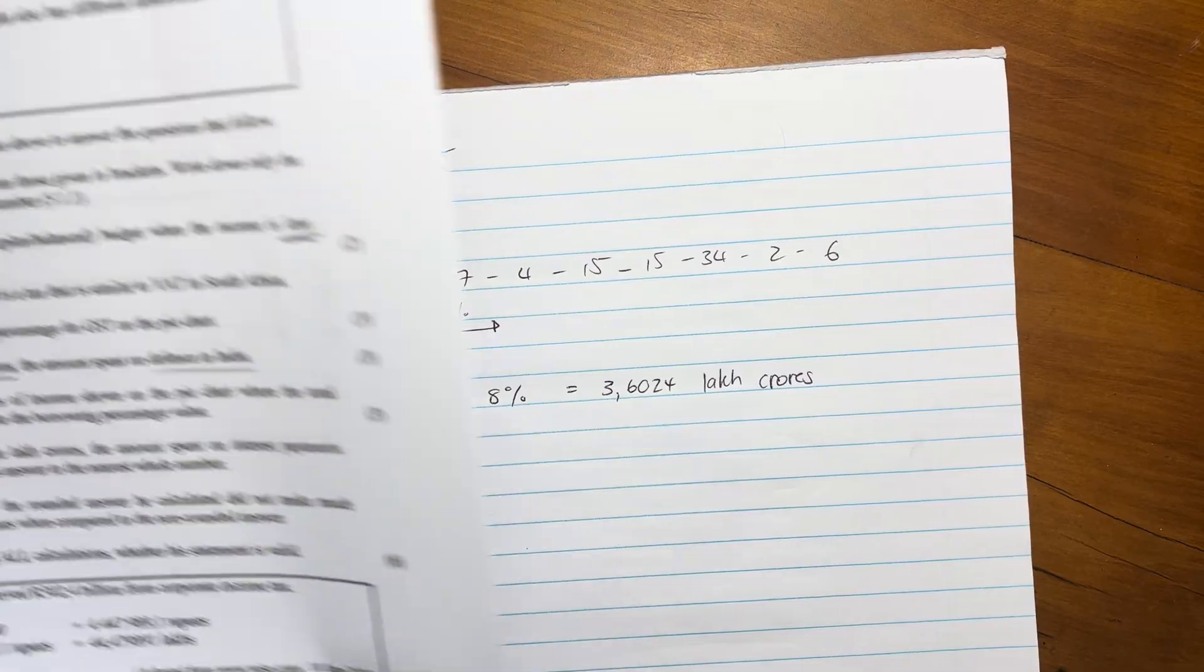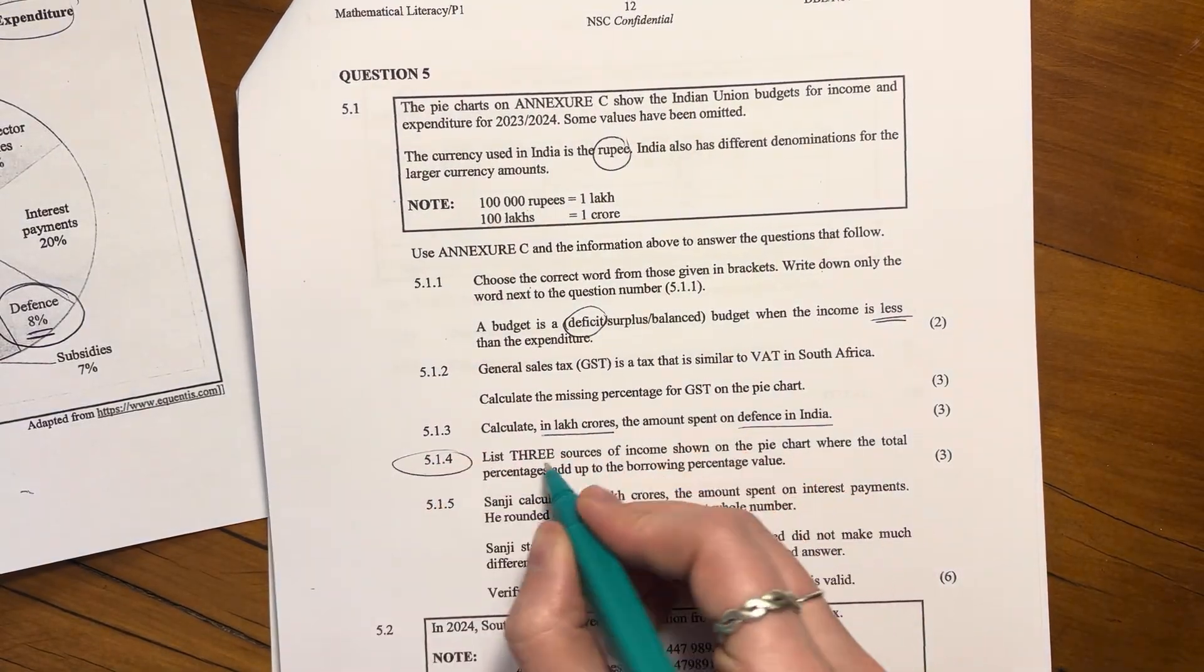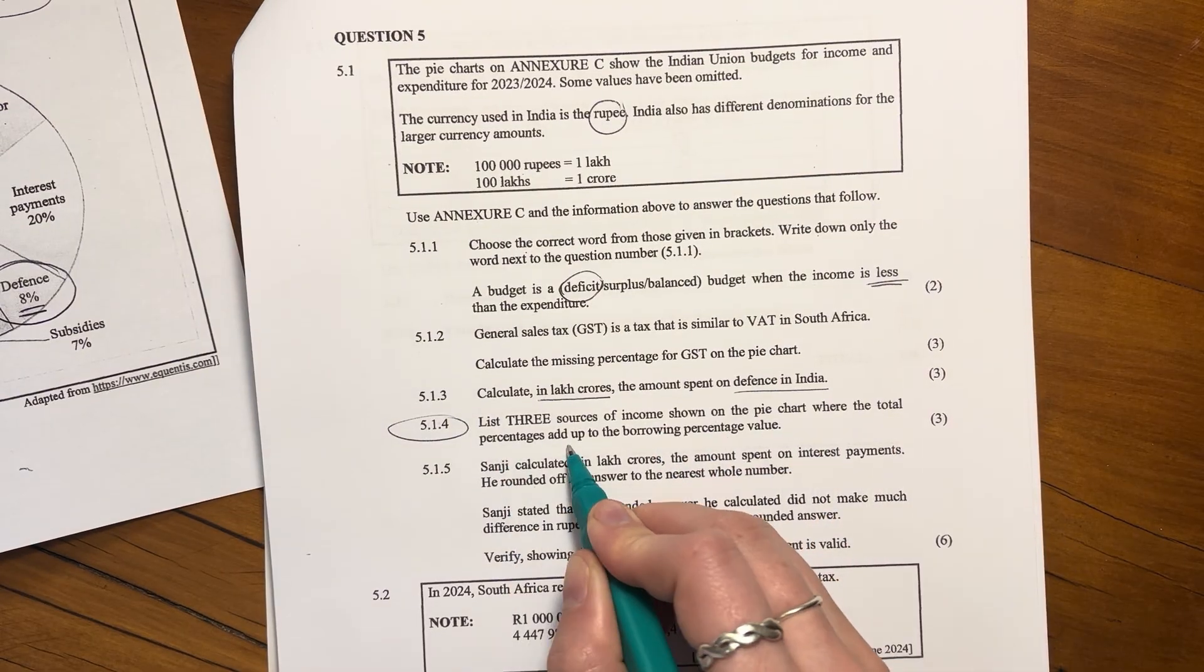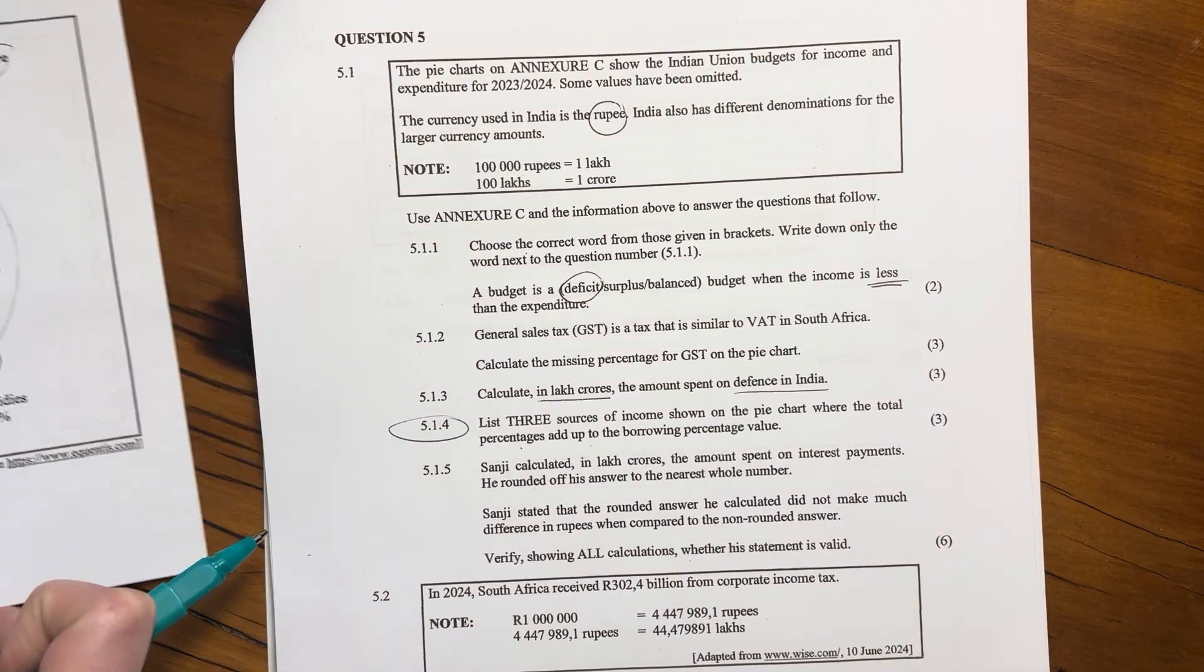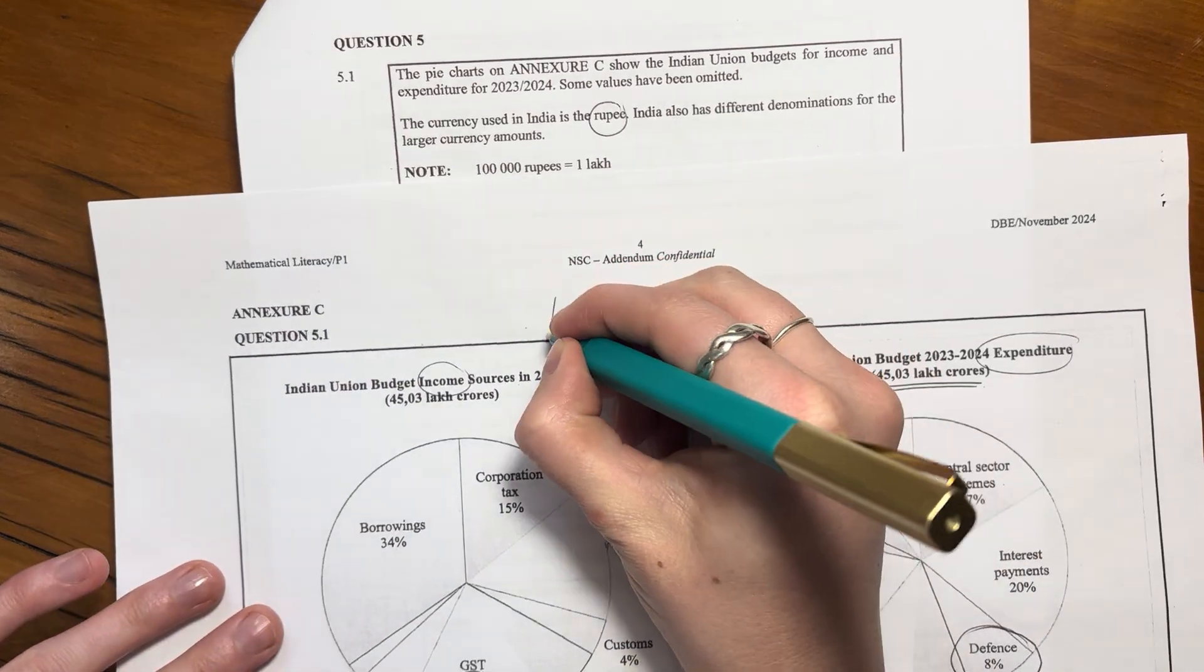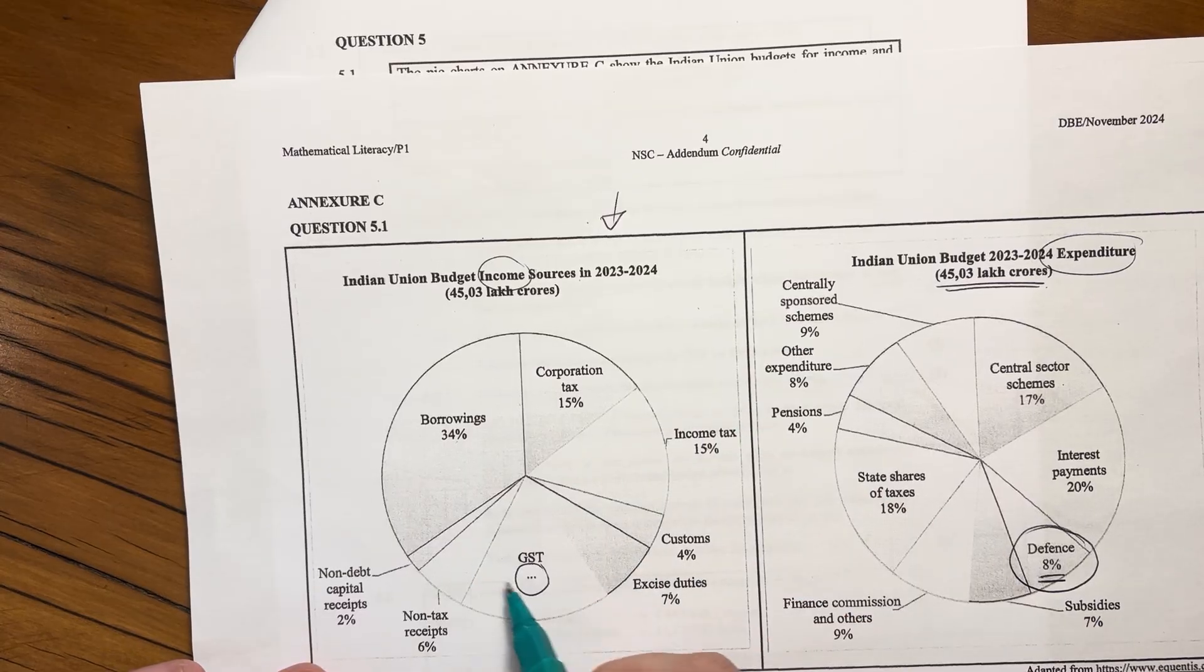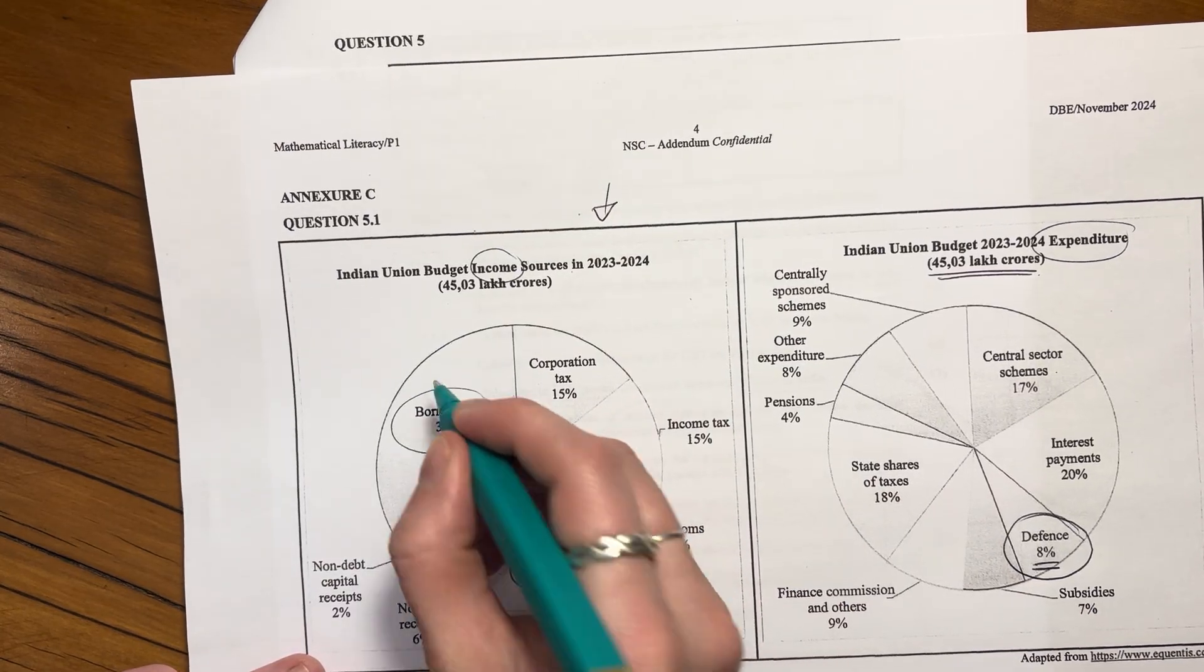Let's look at the next question. List three sources of income shown on the pie chart where the total percentages add up to the borrowing percentage value. So let's just see what's going on. So it did say income. So we're looking over here. This is the one we're looking at. So it's saying which of these, three of these ones, add up to this 34%?